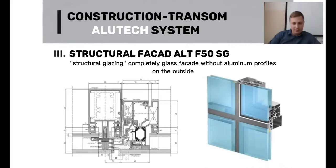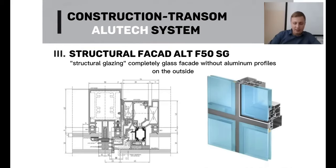The double-glazed window is affixed and firmly pressed against the surface. The next unit or opening element is installed similarly. Connections between units are sealed using a special structural sealant, also known as structural glazing sealant. The visible width of the sealant strips between double-glazed windows is 20 millimeters, creating one flat plane with no fluctuations. All installed units are sealed, resulting in a solid-looking facade.